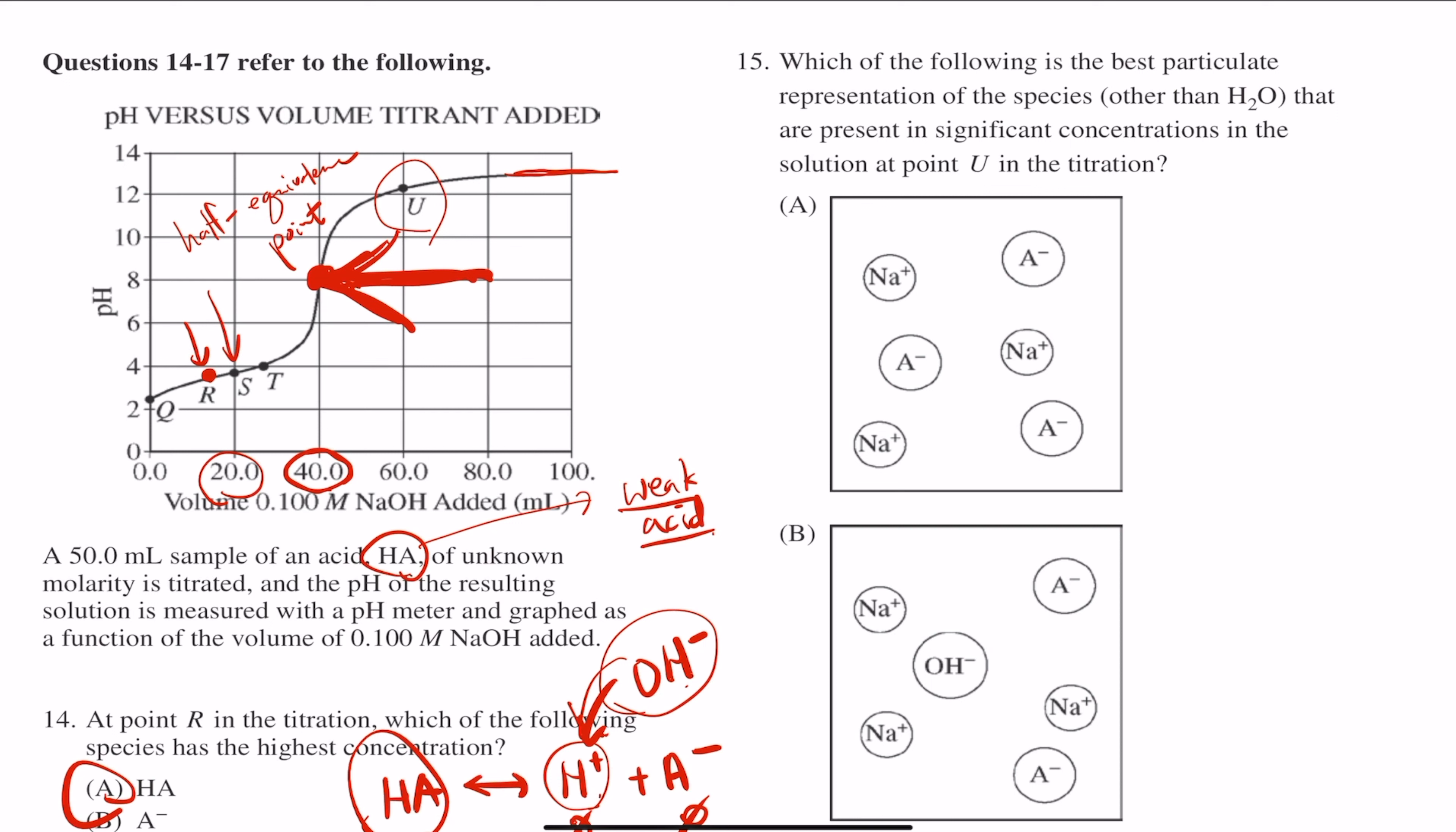There's no more H plus remaining in this whole thing. So if you're at point U, all the H pluses are now gone and all you got is just some basic stuff and perhaps some leftover ions from the salt.